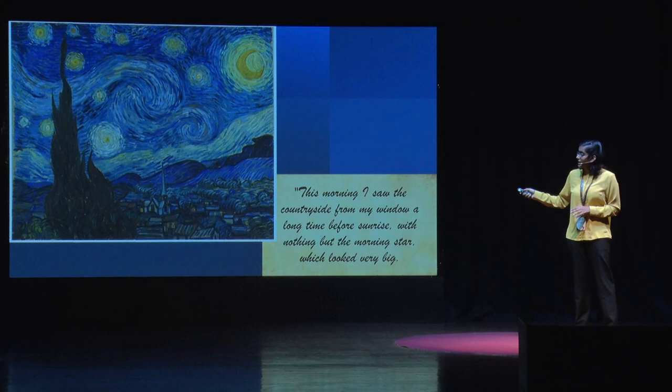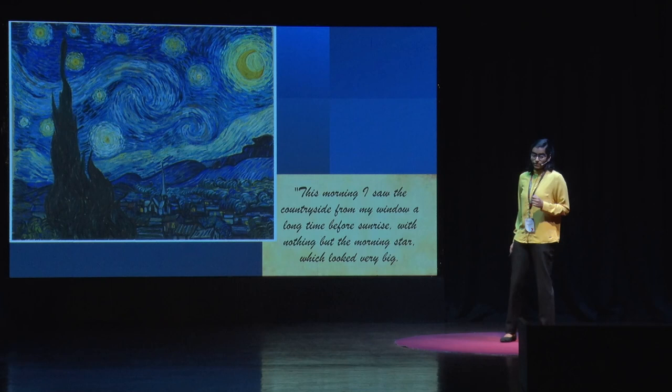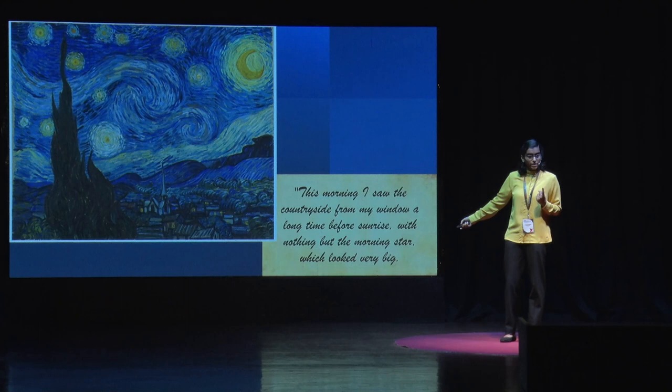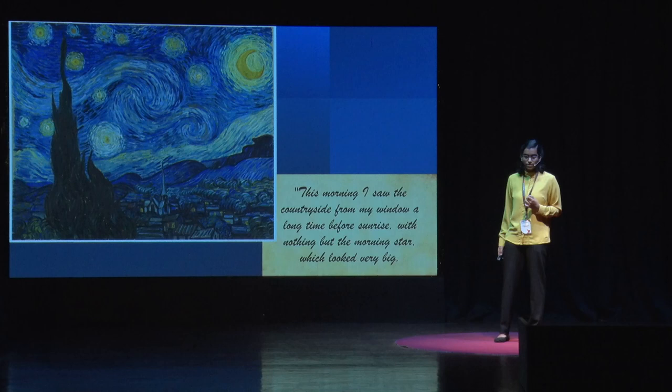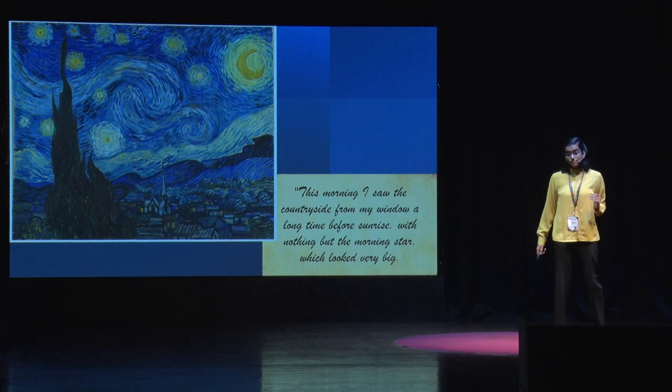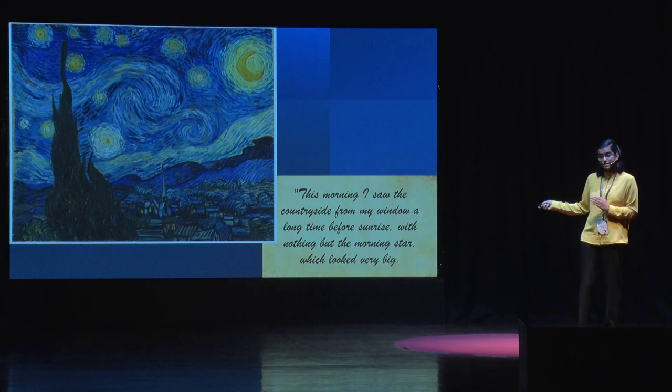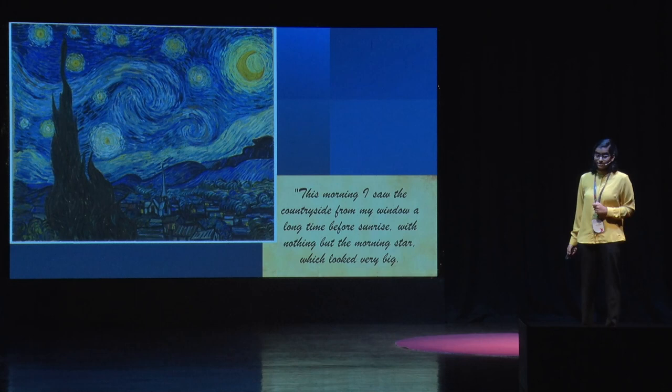Let's revisit the three questions that we began with. Why did elements like the long green cypress tree find their way into the painting if they aren't mentioned in that inspiration line? The cypress tree is symbolic of a bridge between life and death. Think about this in the context that when Van Gogh made Starry Night, he was suffering from a mental illness for which he was being treated in an asylum. And only about a year after making this painting, he committed suicide.